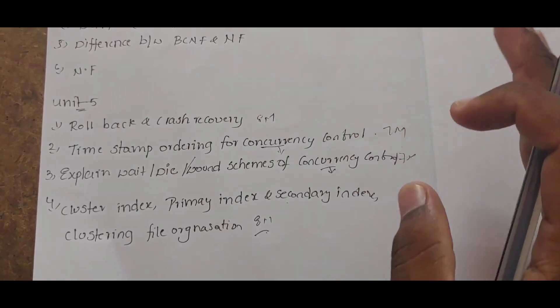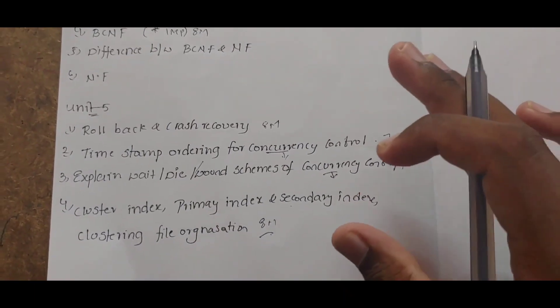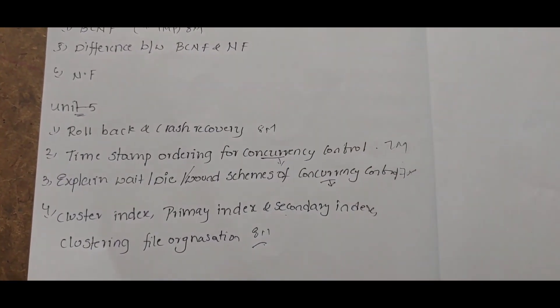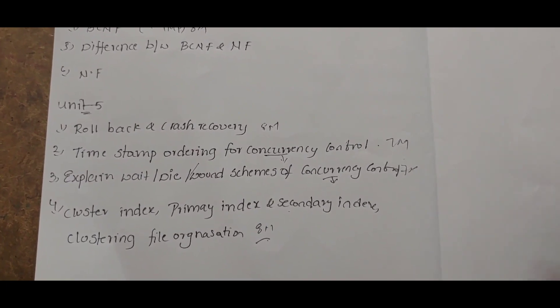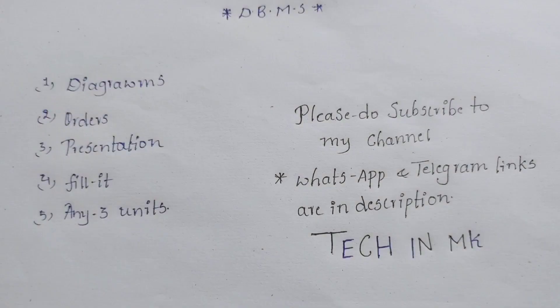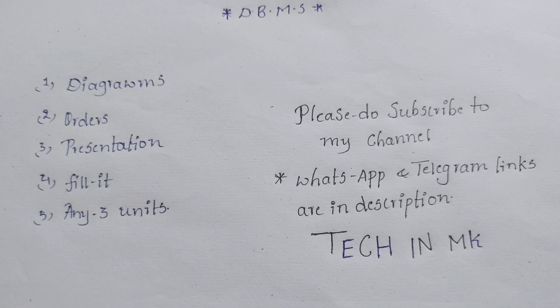Now for DBMS passing tips. In DBMS, the pass mark for R19 is 27 marks, and for R20 it is 24 marks — a difference of 3 marks. The exam has three units, and 3 units contain 3 sections of 21 marks each. For R20 students, use all 3 units; for R19, the same 3-unit strategy applies.